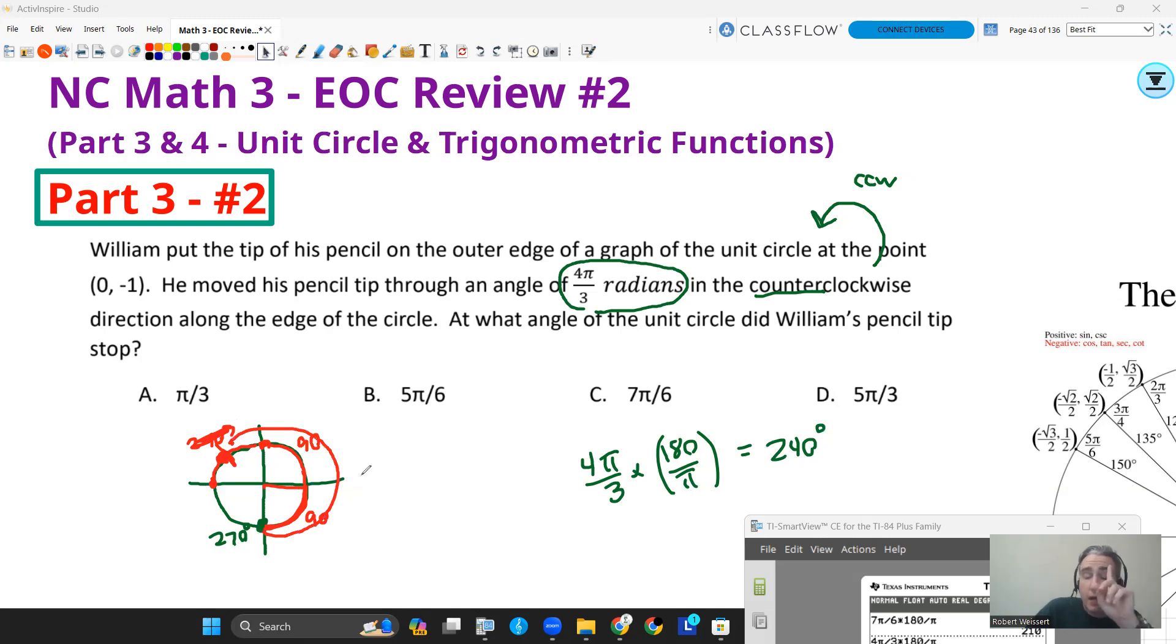Well, I can do the following. I can actually say 270 as my starting point, and I can just add 240. But that's going to give me a little bit too big of a number. If I add those together, I'm going to get 510. And that's not on the unit circle. So I'm going to take 360 away from that. And that's going to give me 150 degrees. So I know that that angle right there is 150 degrees.